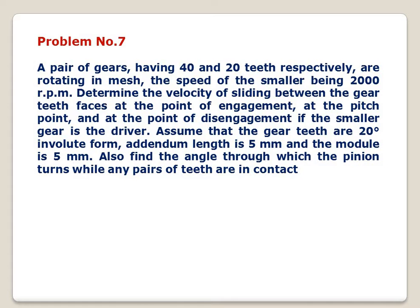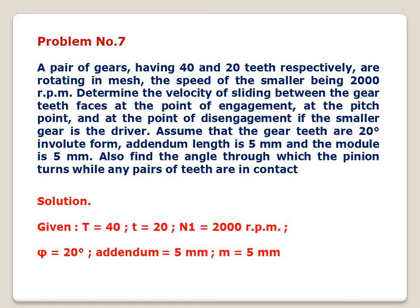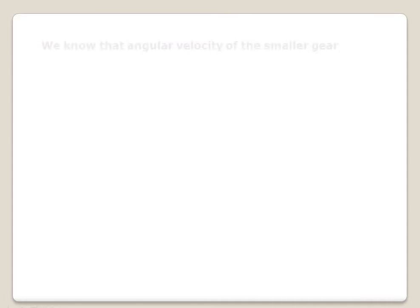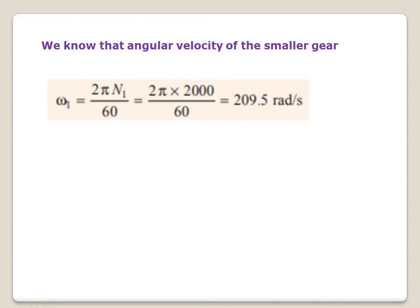Now writing down the given data for the solution. Capital T, number of teeth on larger gear, is 40. Small t, number of teeth on smaller gear, is 20. NP, speed of smaller gear, is 2000 RPM. Phi equals 20 degrees. Addendum equals 5 mm. Module m equals 5 mm.